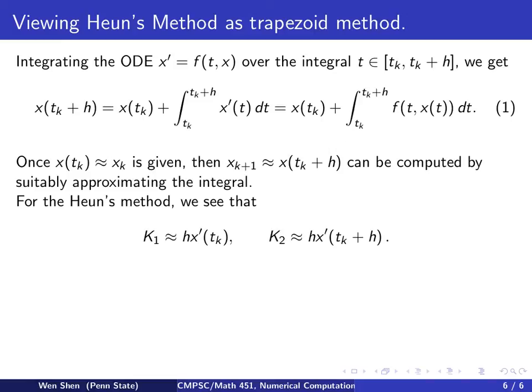In the Heun's method, we see that K1 is h times an f at tk, which is x prime at tk. And then K2 is h times f evaluated at tk plus h. So, it's an approximation to x prime at tk plus h.